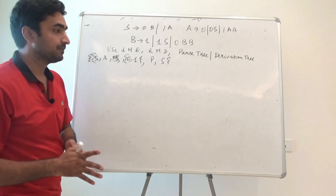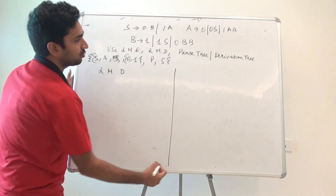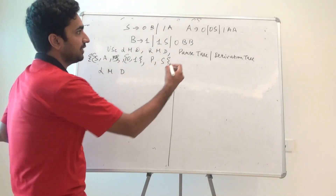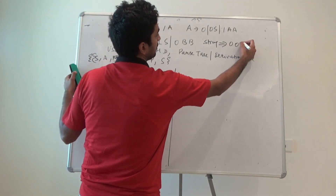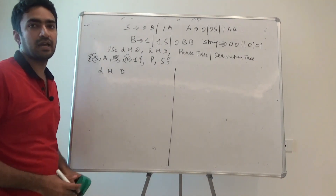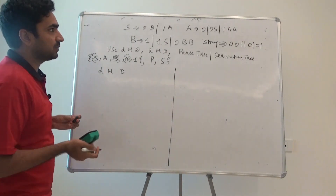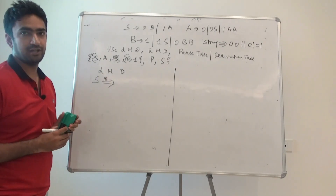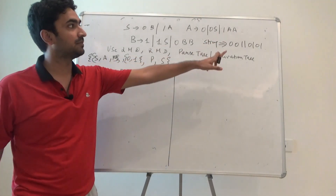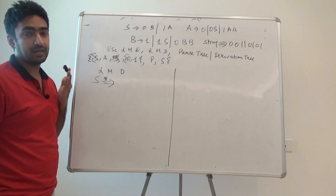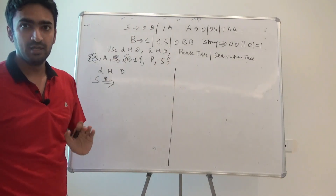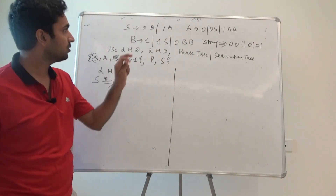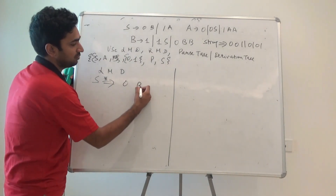Now I'm using LMD — left-most derivation. The string we are going to derive is 0 0 1 1 0 1 0 1. I will start deriving from the starting symbol S, and it will take many steps, so I'm writing a star here. Since the string starts with 0, I have to pick the rule that starts with 0 — that rule is S → 0B. So 0B is picked.